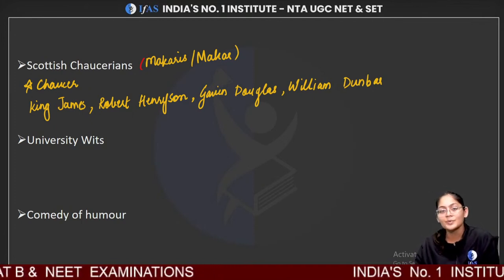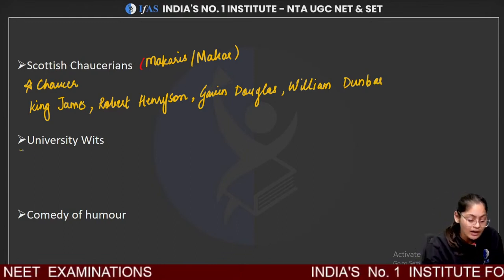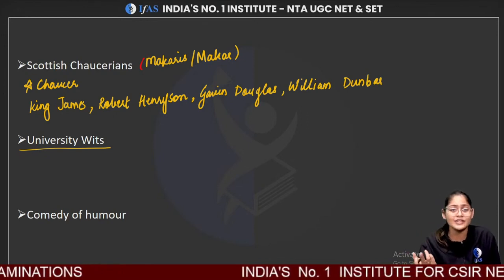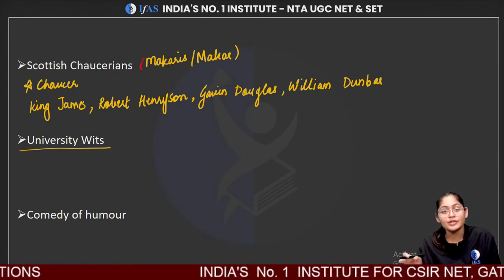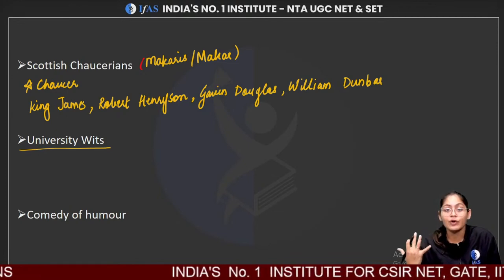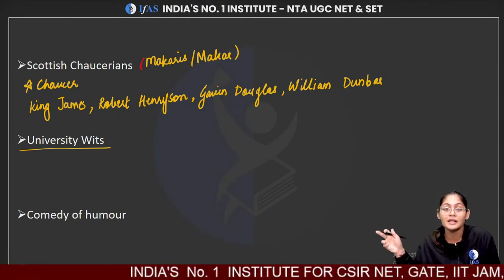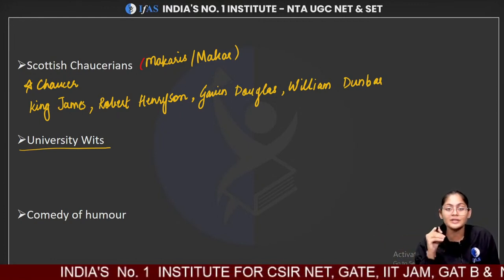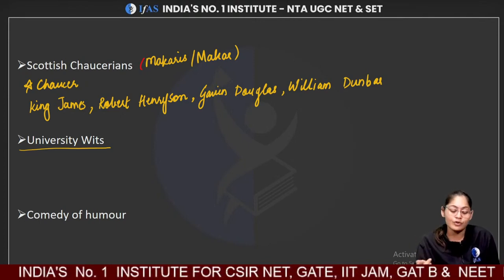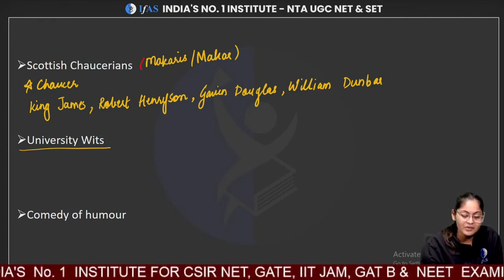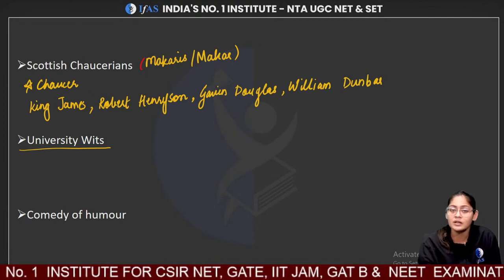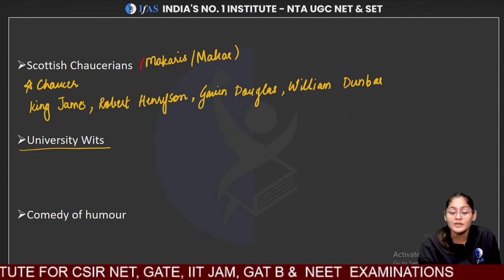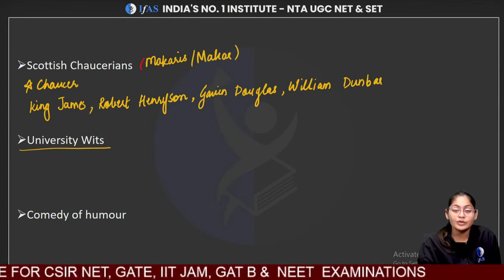Next, moving on to University Wits. University Wits were a group of late 16th-century playwrights and pamphleteers who had their formal education from Oxford and Cambridge. All these University Wits either come from Oxford or Cambridge. Exam questions often ask who among the following was or was not a University Wit, so it's really important to know their names.